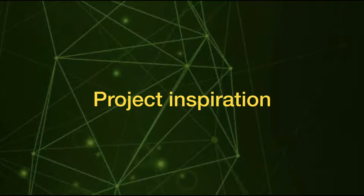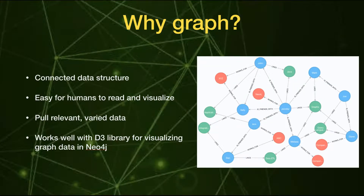Why would we choose Graph? First, it shows connected data structures very well. Looking at this type of dataset, you want to understand how and why your entities are connected, and this is something Neo4j handles really well — graph data structures show how and give context to those connected entities.